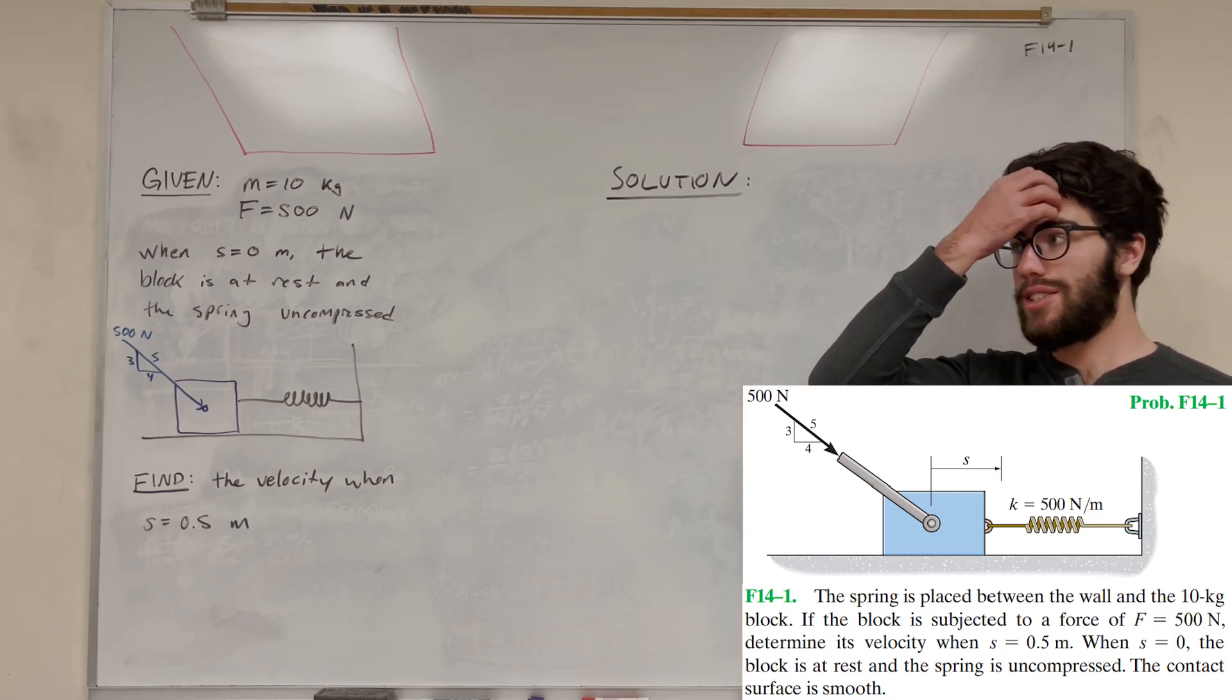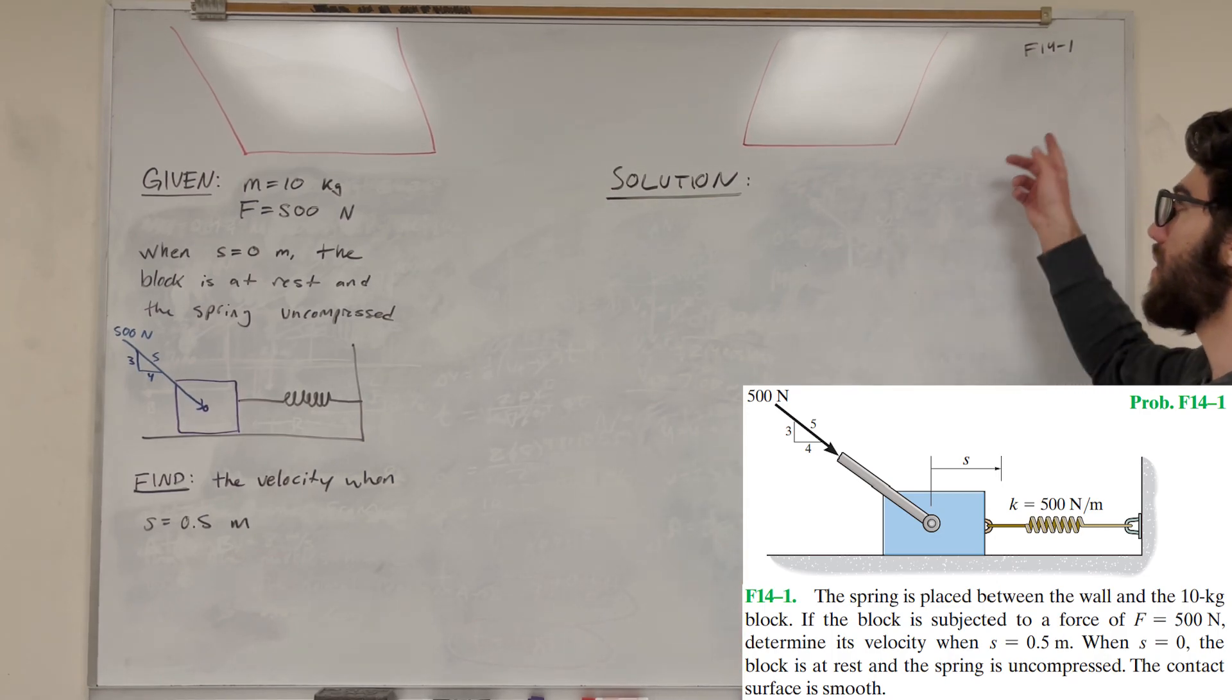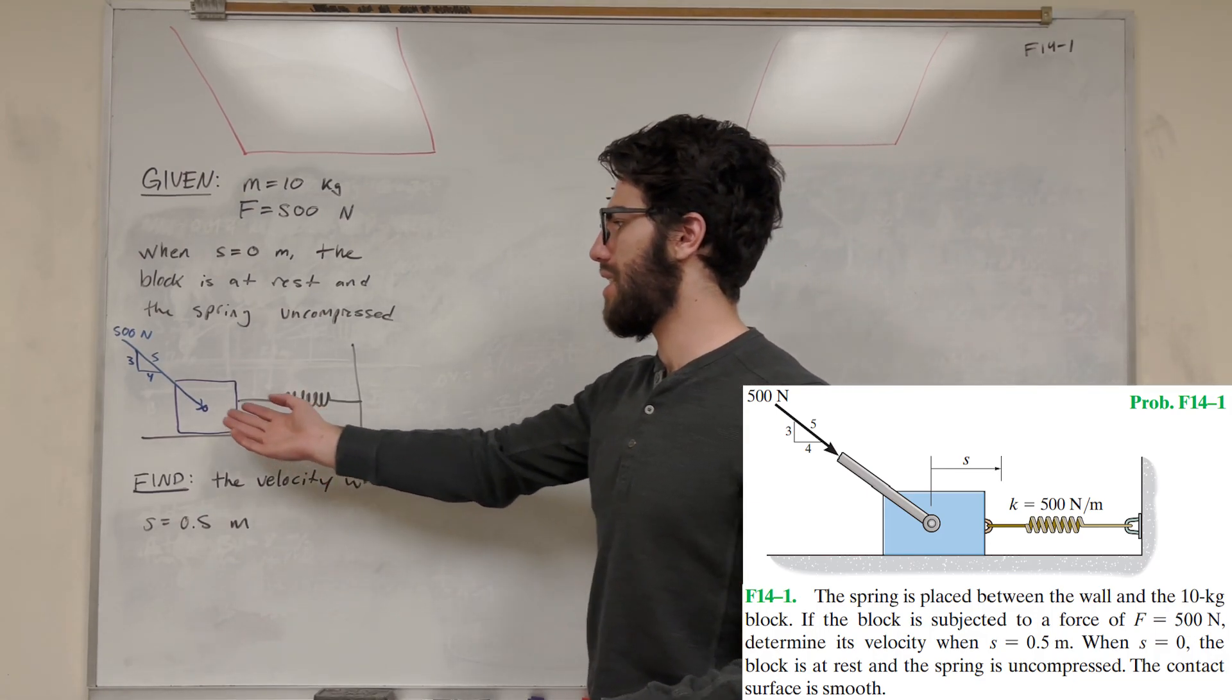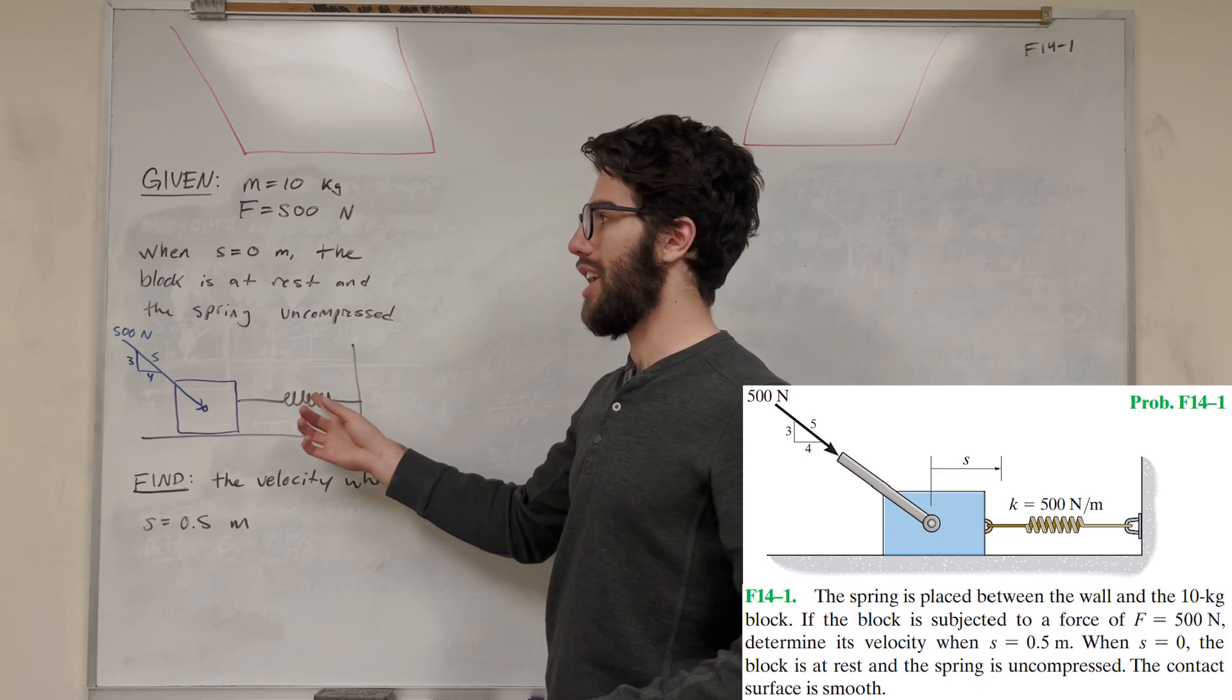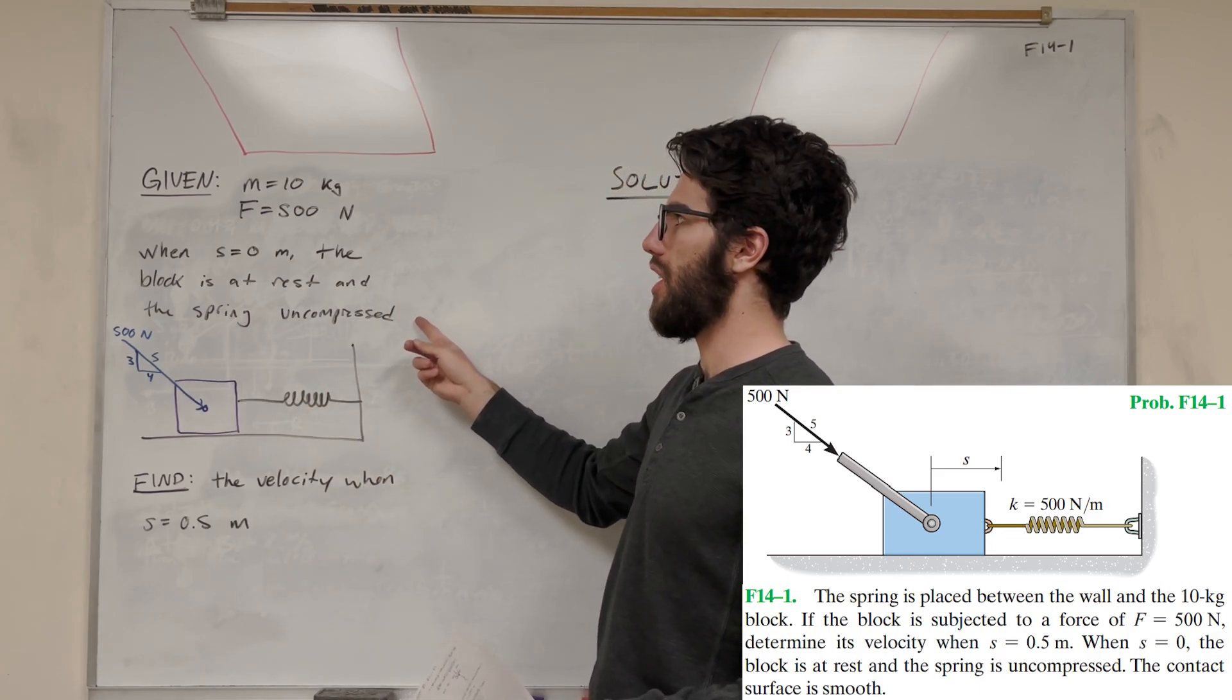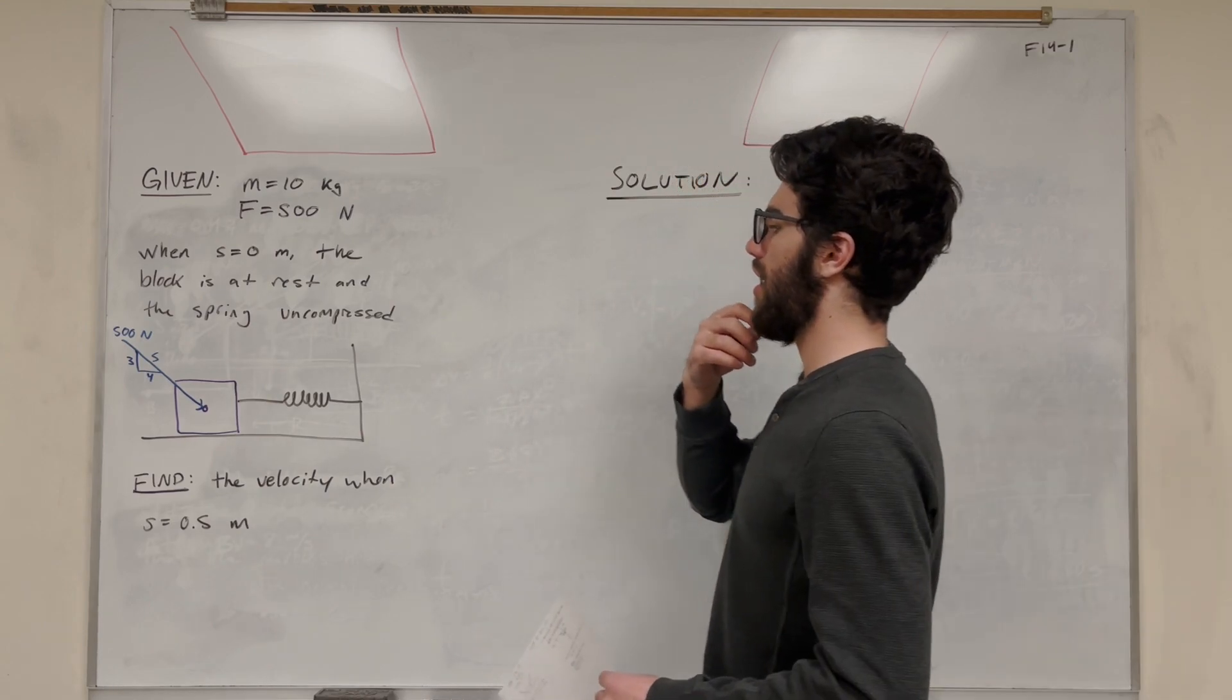What's up CalcA, and welcome back to Dynamics. What do we have here? We're solving F14-1, so our goal is to find the velocity when we compress this block 0.5 meters against the spring. We know that it's at rest initially and the spring is uncompressed initially, so let's solve for it.